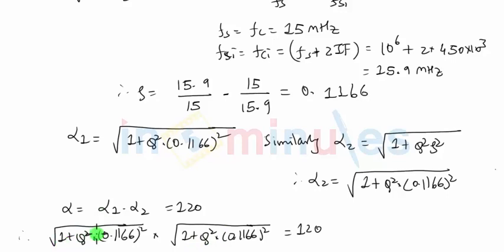So on solving this part, we will obtain Q equal to 93.55. So that becomes the answer. This will be Q associated with the RF amplifier as well as the mixer.